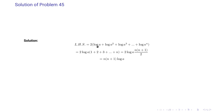We bring the powers in front using the logarithm power rule: log a² becomes 2 log a, log a³ becomes 3 log a, and log a^n becomes n log a. Factoring out log a leaves 1 plus 2 plus 3 up to n inside. The sum of this arithmetic progression is n(n plus 1)/2, and this 2 cancels with the leading 2, leaving n(n plus 1) log a.